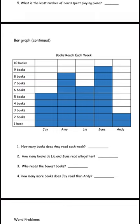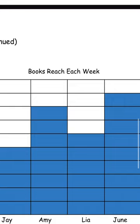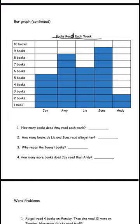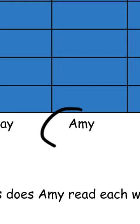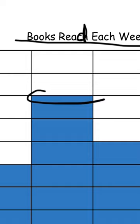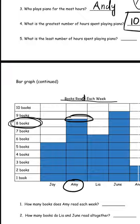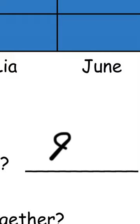Number 1 is asking, how many books does Amy read each week? This time it's books read each week — this is spelled wrong, but it says books read each week. How many books does Amy read each week? Amy is right here. We need to look at where the bar ends. It ends right over here, and if you follow it, it ends at 8 books. So 8 is the answer for number 1.